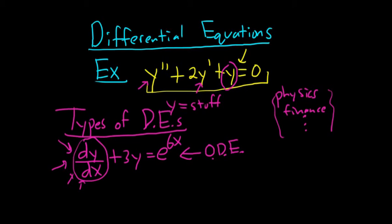The other type of DE has partial derivatives. For example, the second partial derivative of u with respect to x plus the second partial derivative of u with respect to y equals 0. This one has partial derivatives in it and is called a partial differential equation or PDE.